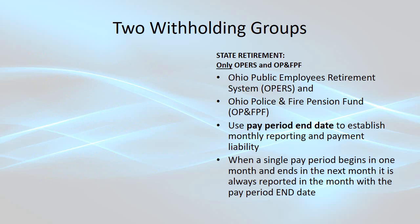State retirement is only OPERS or OP&F. OPERS is Ohio Public Employees Retirement System and OP&F is the Ohio Police and Fire Pension Fund. These are state retirement agencies. They both use the pay period end date of a wage to establish the monthly reporting and payment liability. When a single pay period begins in one month and ends in the next — which is common with a biweekly frequency — it's always reported in the month with the pay period end date.